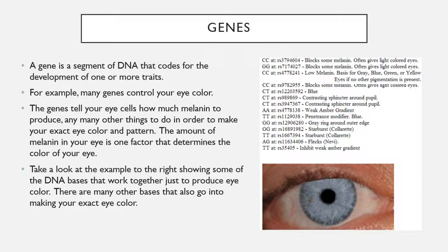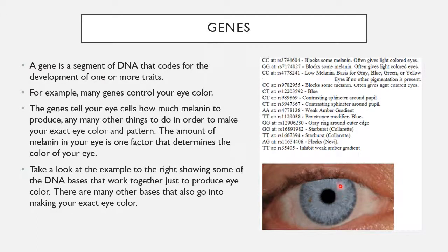Looking at the example shown, it shows some of the DNA bases that work together just to produce eye color. If you have the DNA bases cytosine and cytosine (two C's) at a specific location in your DNA code, those two C's would code for blocking some melanin and you will often end up with light-colored eyes. If you have two guanines (two G's) at a different location, that will also block some melanin and give you light-colored eyes. If you have adenine and adenine at another location, it gives you a weak amber color to your eyes.